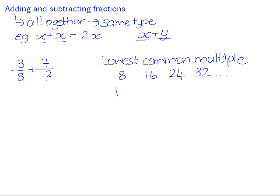And if we look at the 12 times table: 12 times 1 is 12, 12 times 2 is 24, 12 times 3 is 36, etc. The lowest multiple that is common to both 8 and 12 is going to be 24. So that is going to be the common denominator that you choose for 8 and 12.